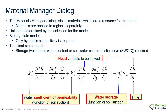The governing partial differential equation for saturated transient flow involves the specification of both the coefficient of permeability, which is also called the hydraulic conductivity, as well as the water storage function in the material. In a steady state model there is no change in storage over time and the right hand side of this equation is set equal to zero.